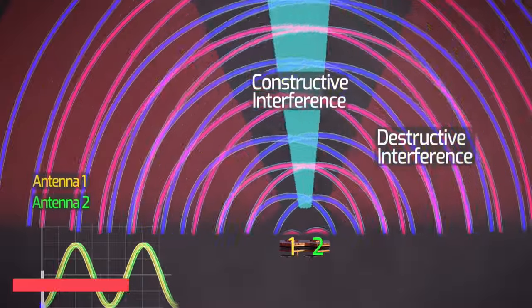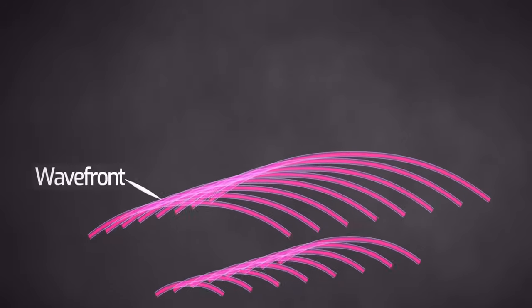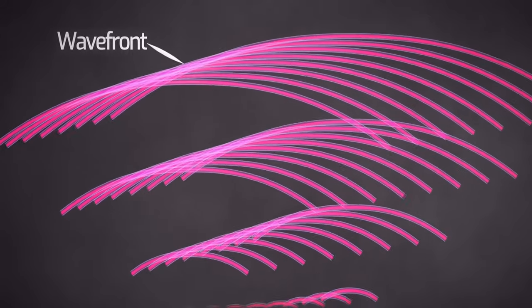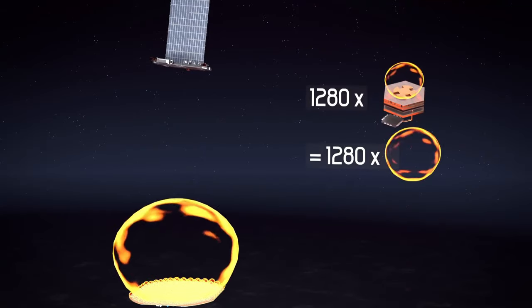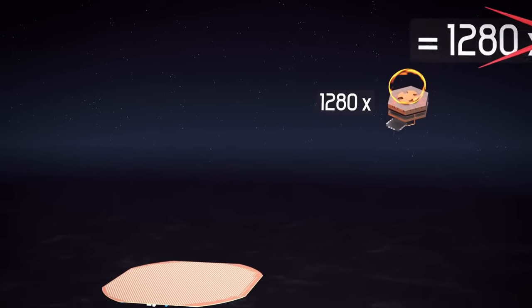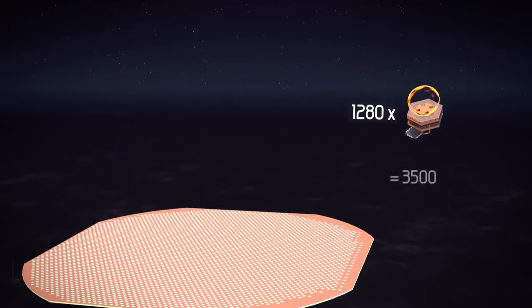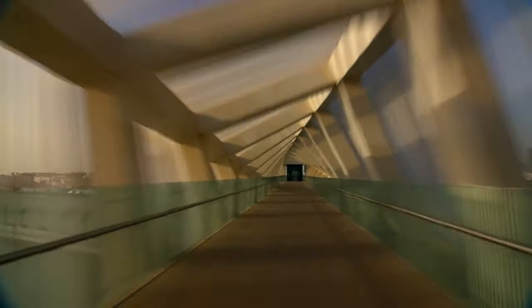By connecting 1,280 antennas together, we create a beam with enough strength and directionality to reach space. However, the collective power of these antennas isn't simply multiplied by 1,280. The effective strength and range of the primary beam approach 3,500 times that of a single antenna. It's like surrounding one antenna with mirrors, significantly enhancing the beam's power.